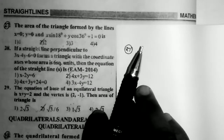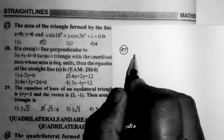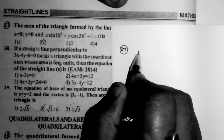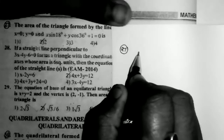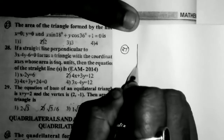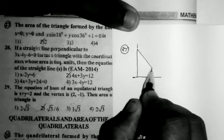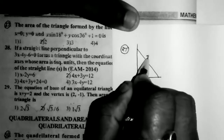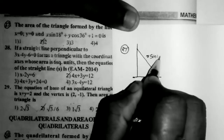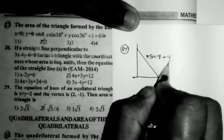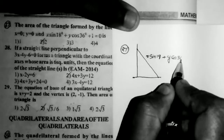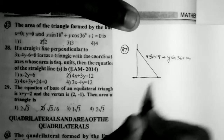Continuation video. Sum number 27: the area of the triangle formed by the lines x = 0, y = 0, and x·sin18 + y·cos36 + 1 = 0. So three lines are given here: x = 0 and y = 0 are the coordinate axes, and the third line is x·sin18 + y·cos36 + 1 = 0.